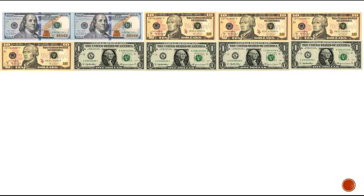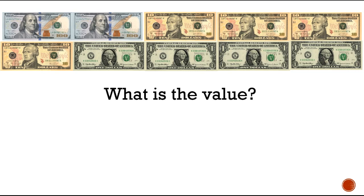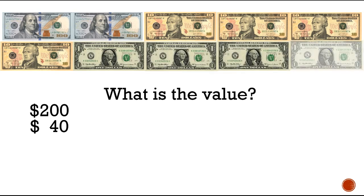All right, let's find out the value here. Be careful because we have one-hundred-dollar bills, ten-dollar bills, and one-dollar bills this time. Let's count the hundred-dollar bills first: 1, 2 — we have two hundred dollars. Now let's count the tens: 10, 20, 30, 40 — so let's jot down forty dollars. Now let's count the ones: 1, 2, 3, 4 — four dollars.